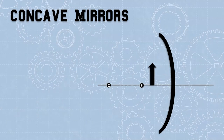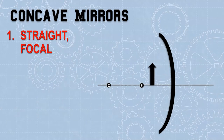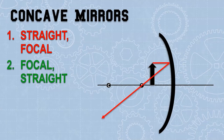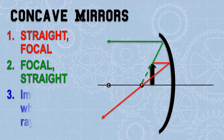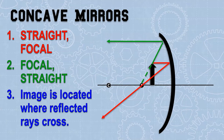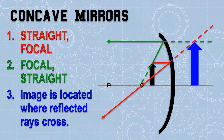Let's repeat this with an object inside the focal length. We go straight and reflect through the focal point. Then we go through the focal point — in this case, the focal point is behind us, so we use it as a guide and reflect out straight. The image is located where the reflected rays cross. In this case, they don't cross on the left side, so you have to extend both rays — they cross on the right side. This makes it an upright, virtual, and larger image.